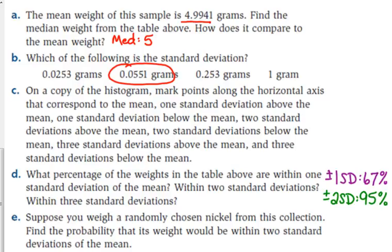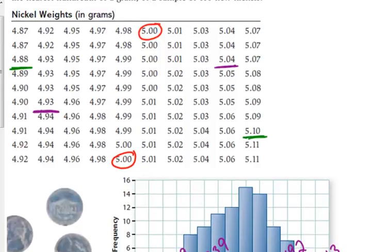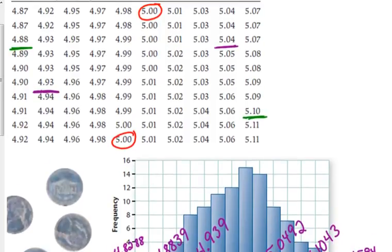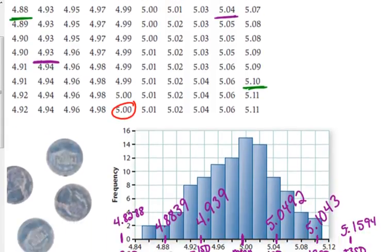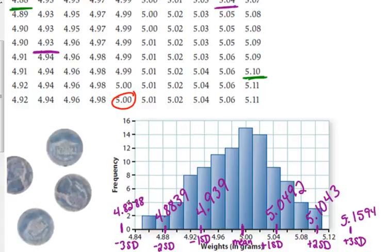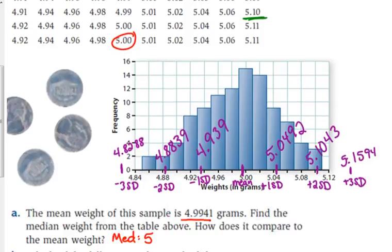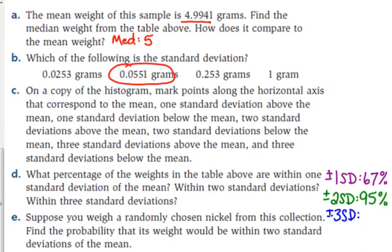And if we extend it to three standard deviations, what happens? It's all of them, isn't it? It's all of them because our three standard deviations were completely off the chart. The chart had all of our values in it. So, 100% of our data was within three standard deviations of the mean. Now, we'll find out in the next couple of questions that that's a little unusual.